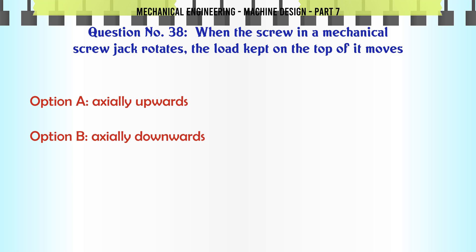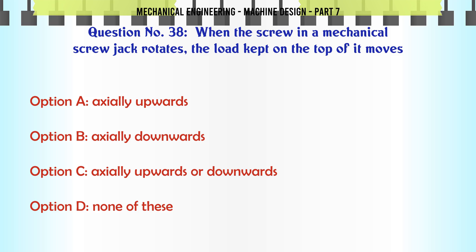When the screw in a mechanical screw jack rotates, the load kept on the top of it moves: a) axially upwards, b) axially downwards, c) axially upwards or downwards, d) none of these.